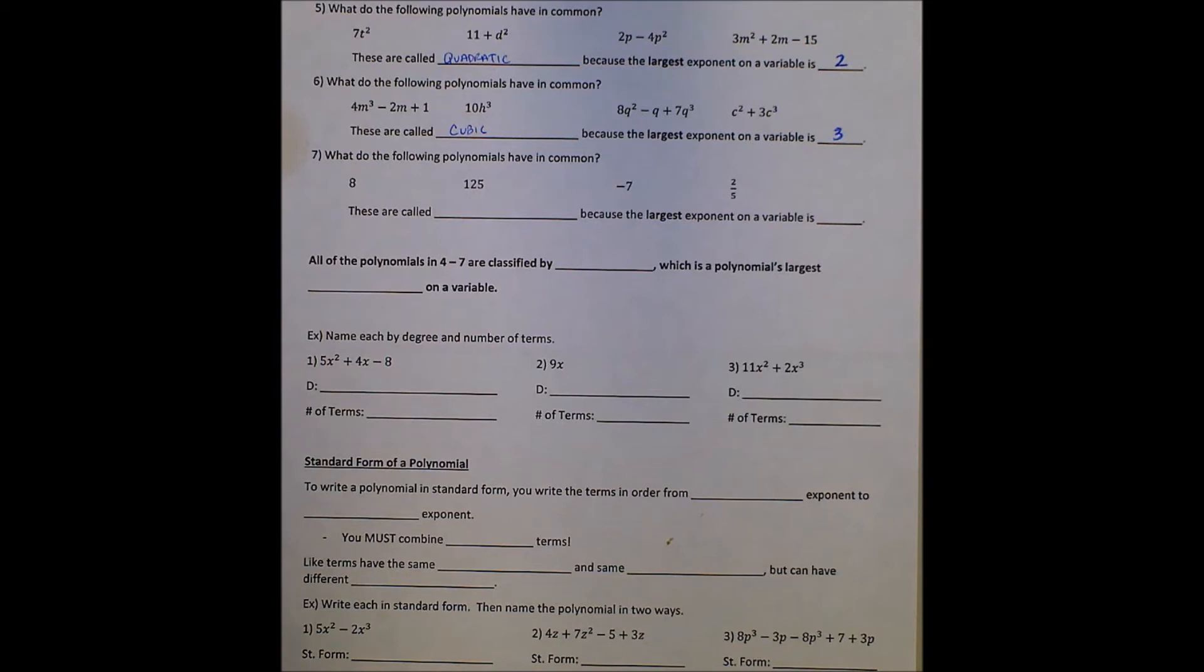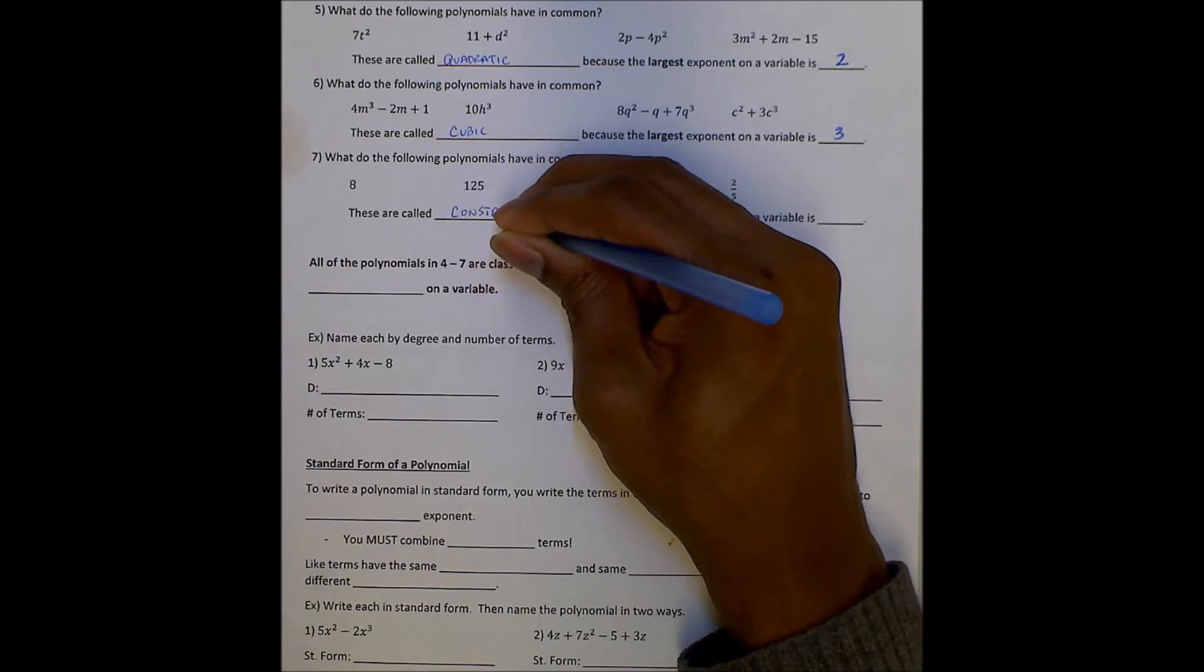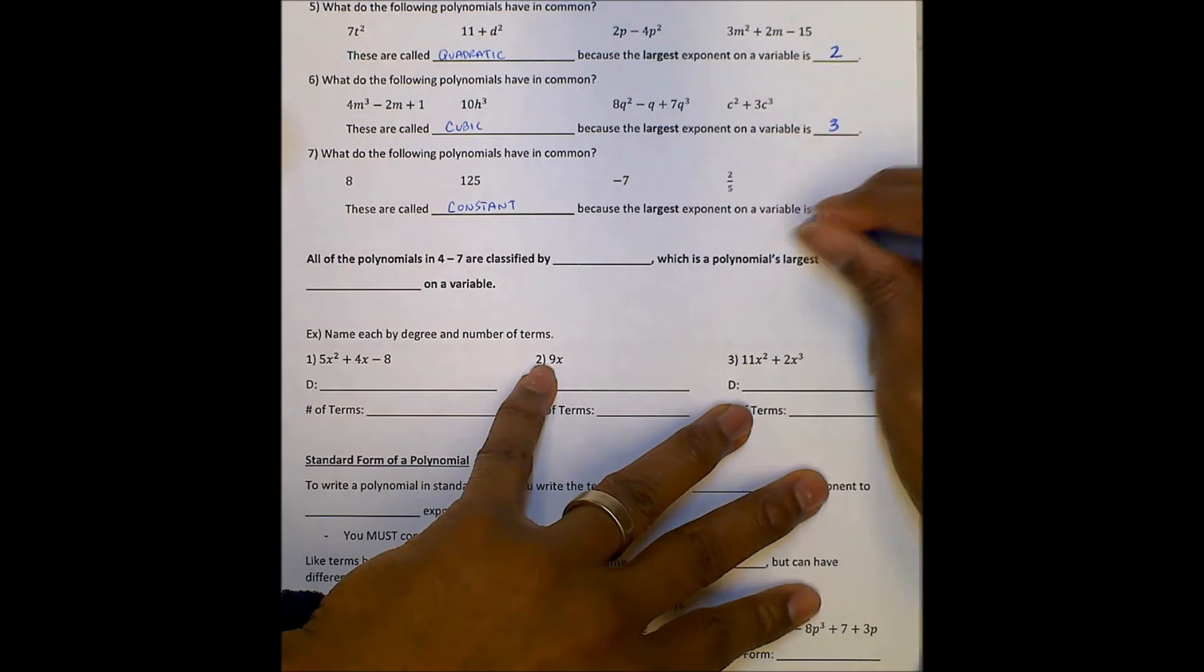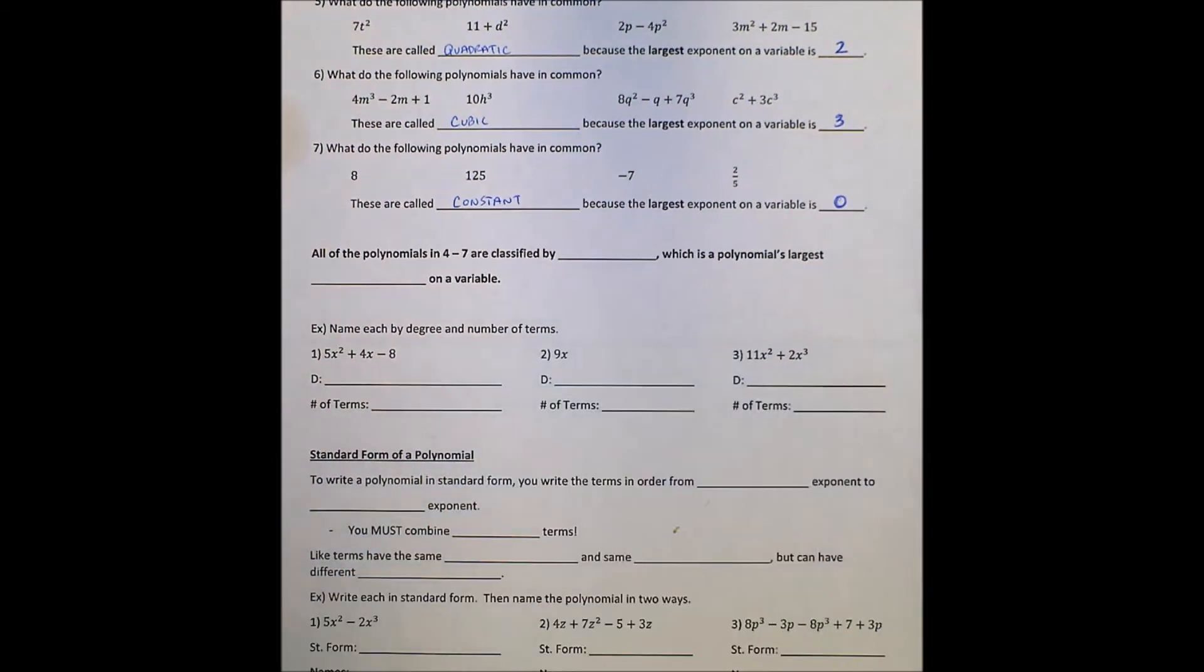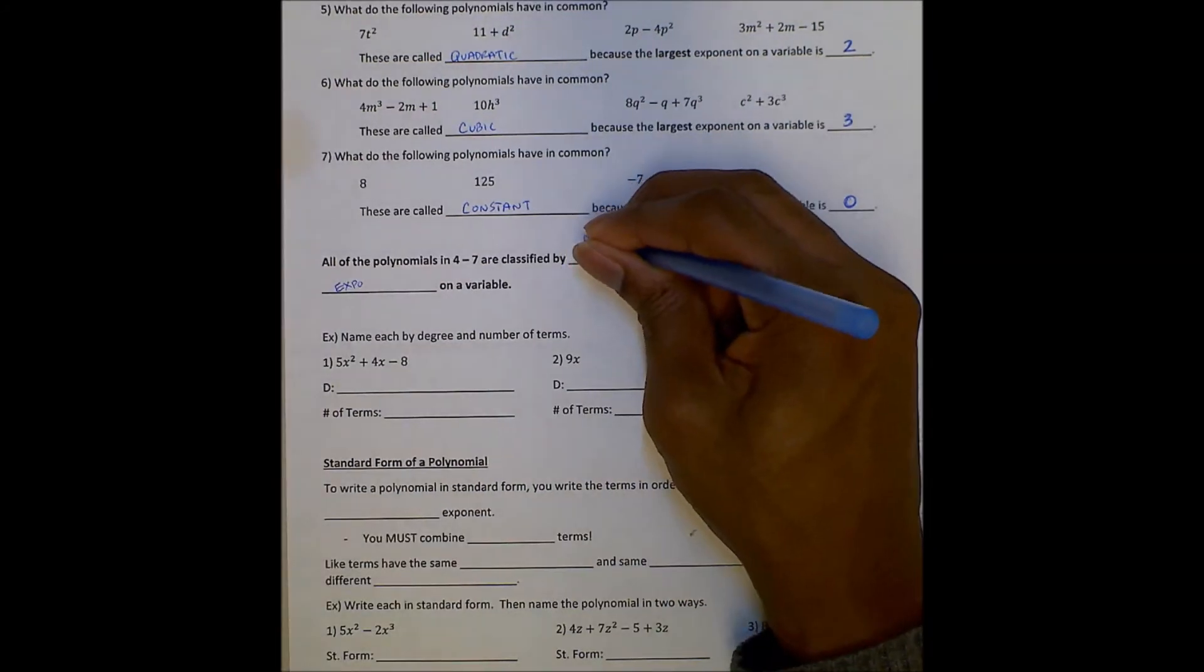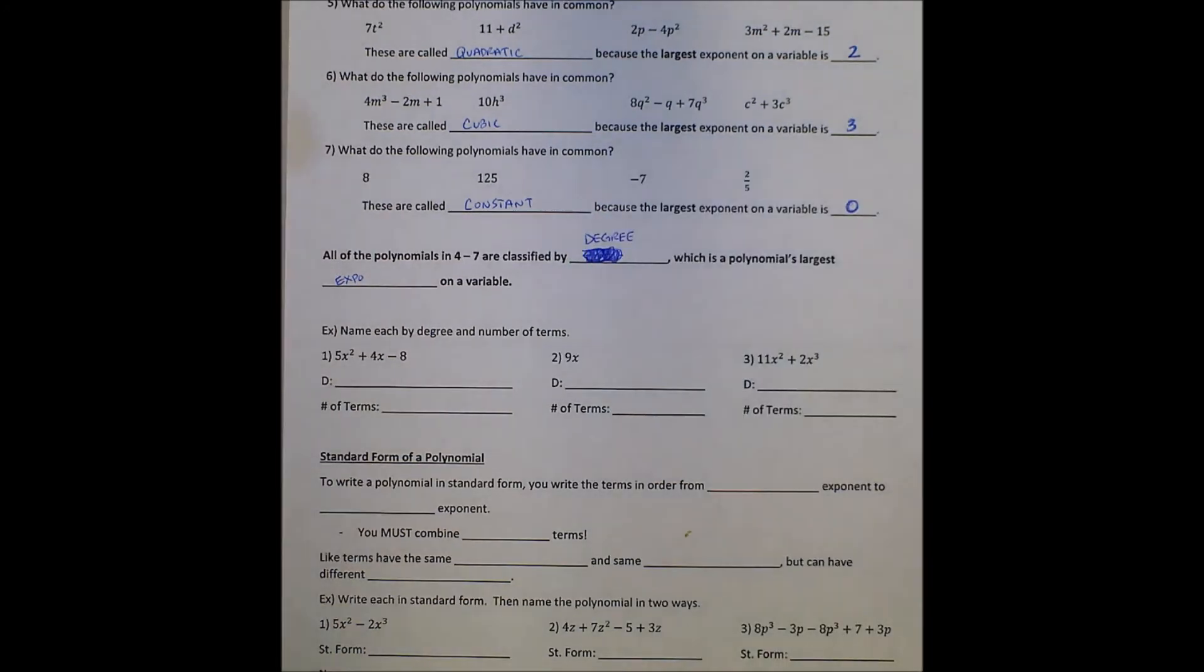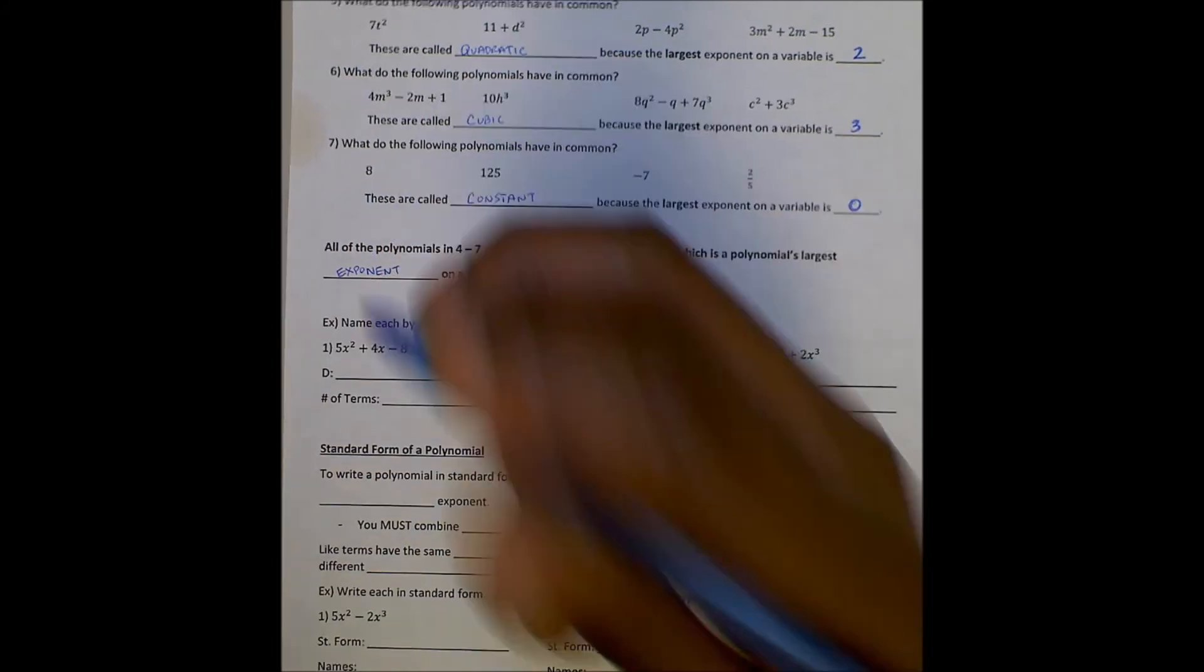Finally, with this set - 8, 125, negative 7, 2 fifths - these are called constants. Because the largest exponent of the variable, well there are no variables, so we'll say the largest exponent of the variable is 0. All the polynomials in 4 through 7 are classified by degree, which is a polynomial's largest exponent of the variable.